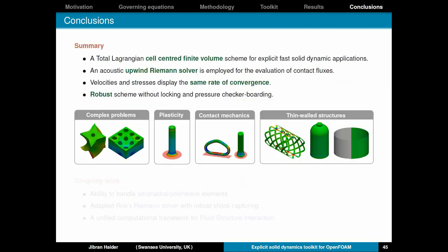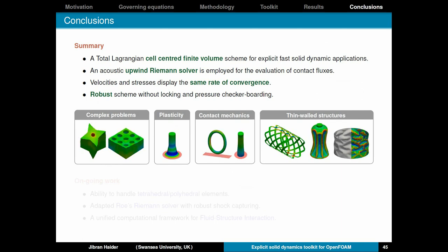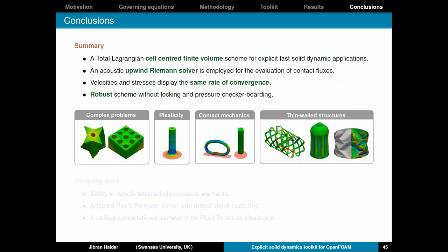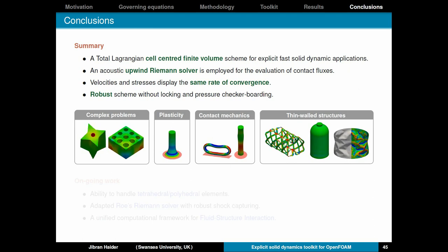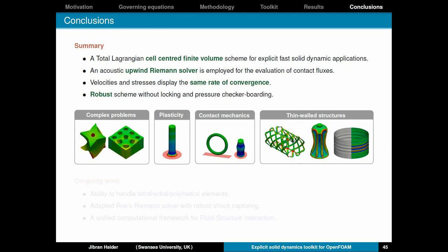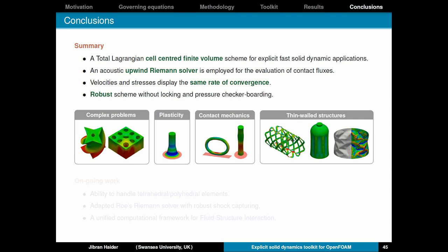Finally I would like to conclude this presentation. What I've presented here is a total Lagrangian cell centered finite volume scheme for explicit fast solid dynamic applications. It employs an acoustic upwind Riemann solver which is very cheap and is used to evaluate the contact fluxes. Very important that the velocities and stresses display the same rate of convergence. So if your interest is in stresses, then employing this methodology would be really useful. And as you can see in the various simulations, it's a robust scheme without locking and pressure checkerboarding.